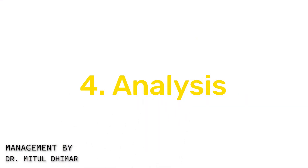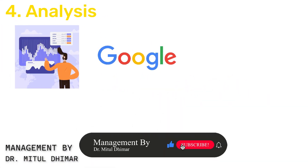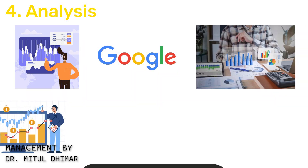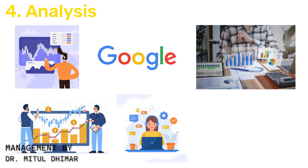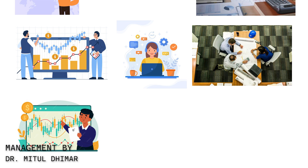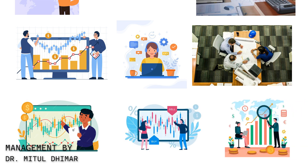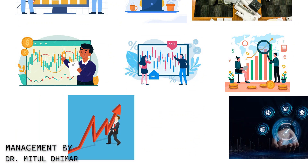Stage 4: Analysis. For analysis, we will look at Google's management of its diverse portfolio of products. Google constantly analyzes market data, user feedback, and performance metrics to understand the success factors behind each product. This analytical approach enables Google to optimize its offerings and stay ahead in the competitive tech landscape.